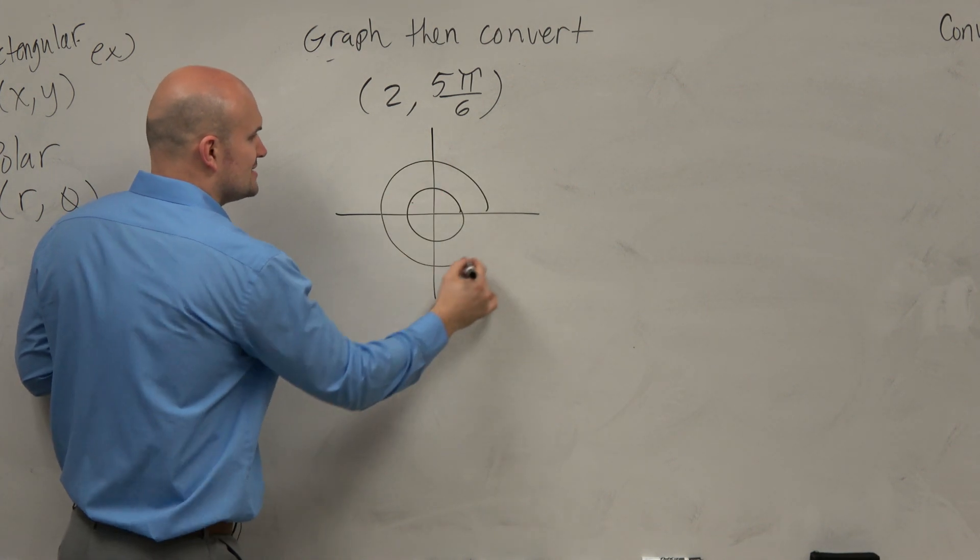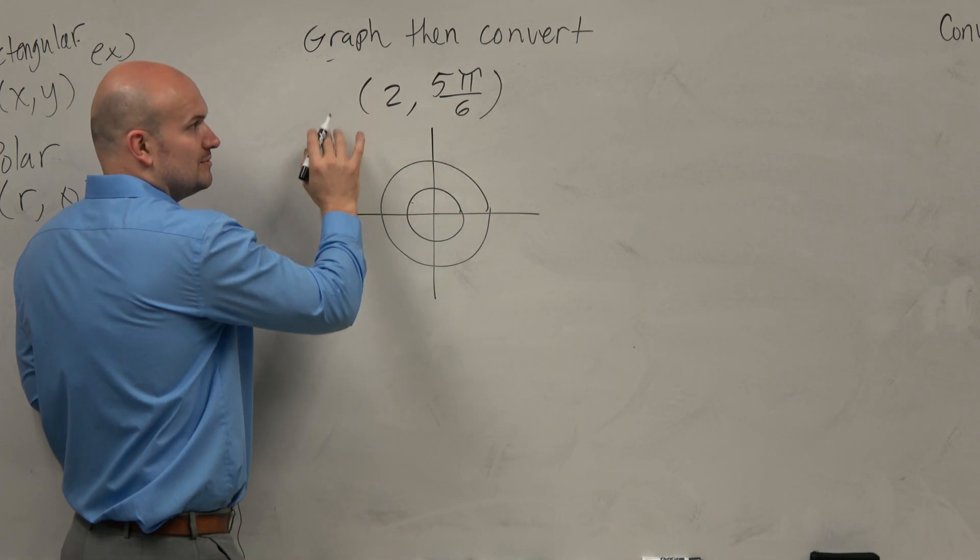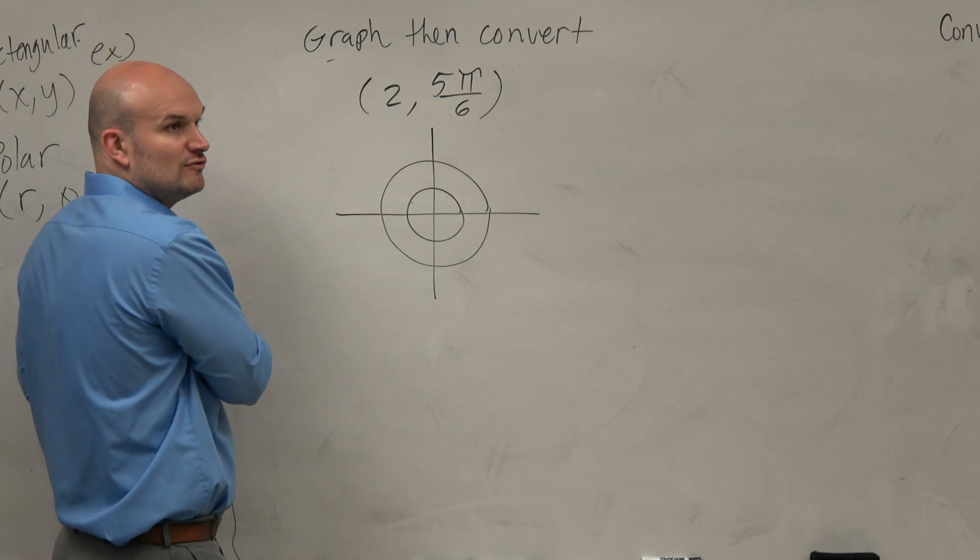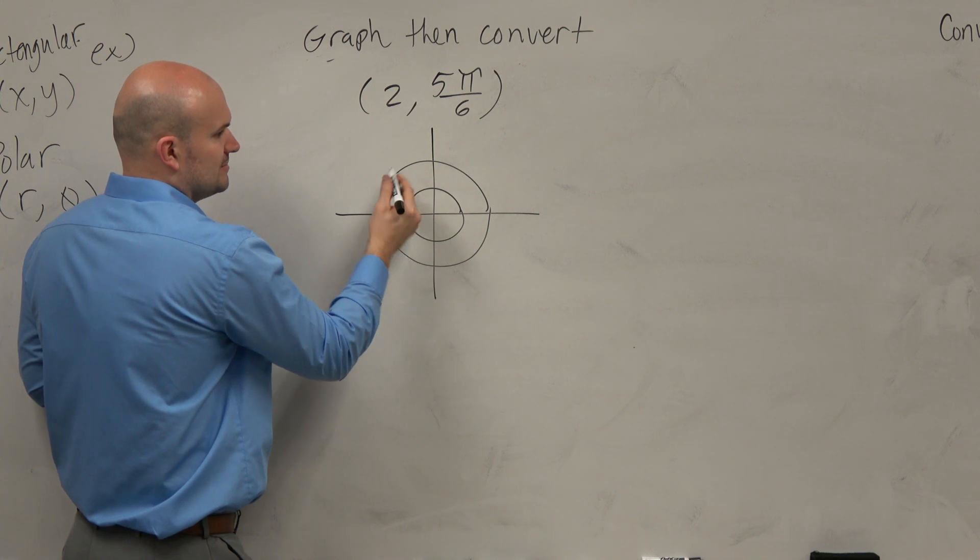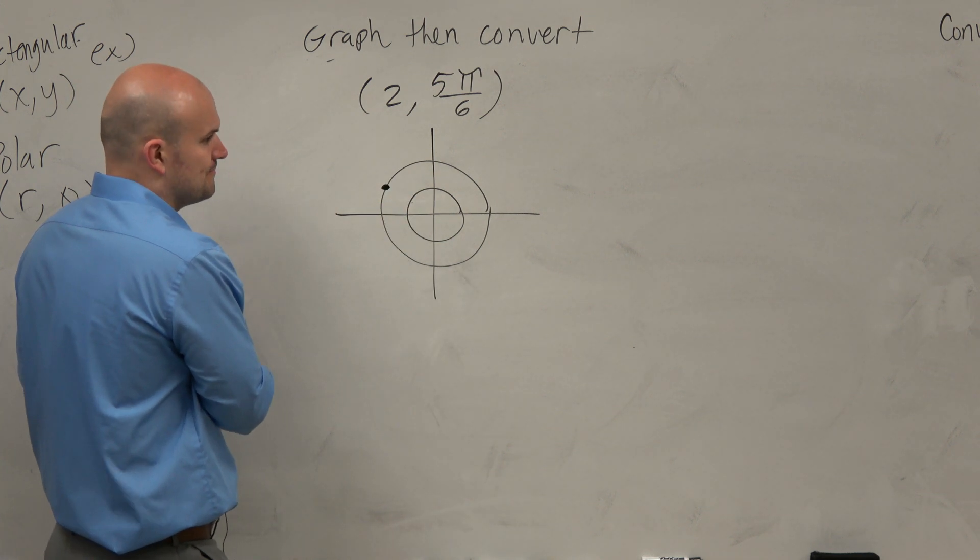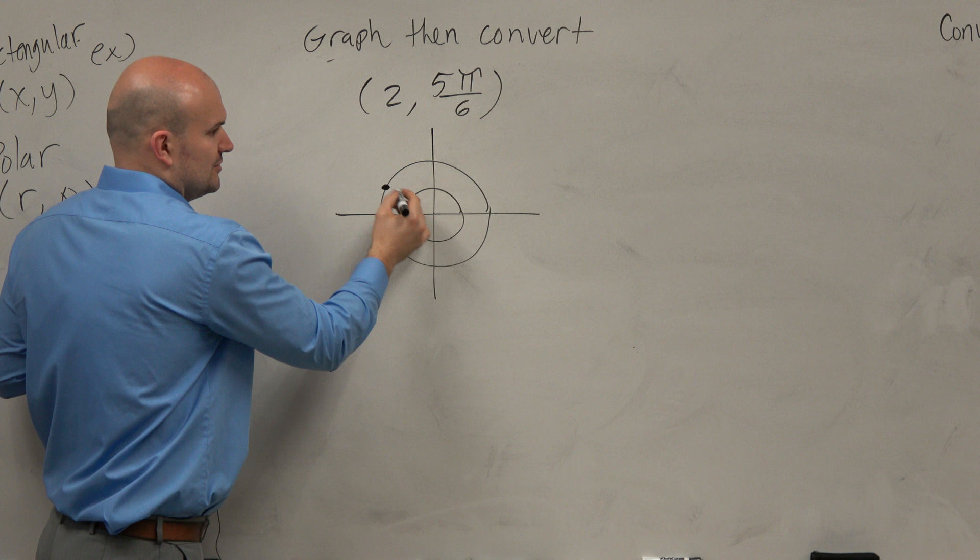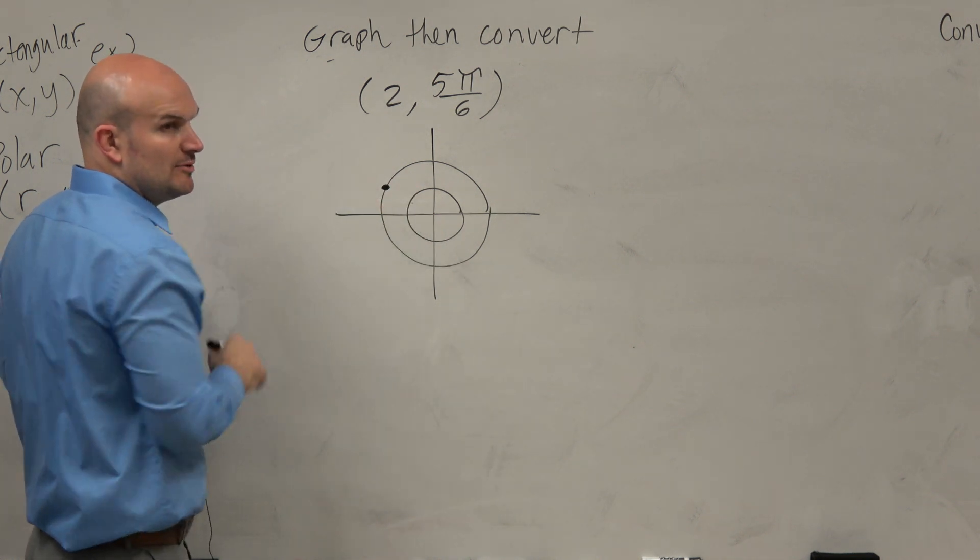Obviously we're going to have two rings here, so we're going to go to the outer ring 2. And then we just need to apply it for the angle 5π over 6 in standard form, which is going to be right there, roughly. Right? Yeah, OK. Because obviously you could draw the angle here, π over 6, stuff like that, but that would be your coordinate point.